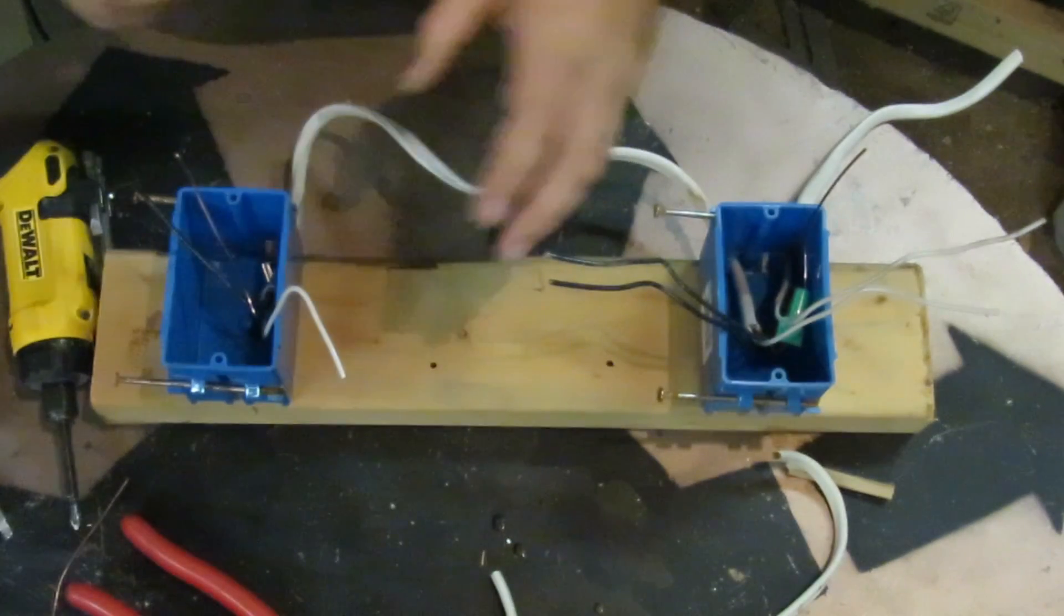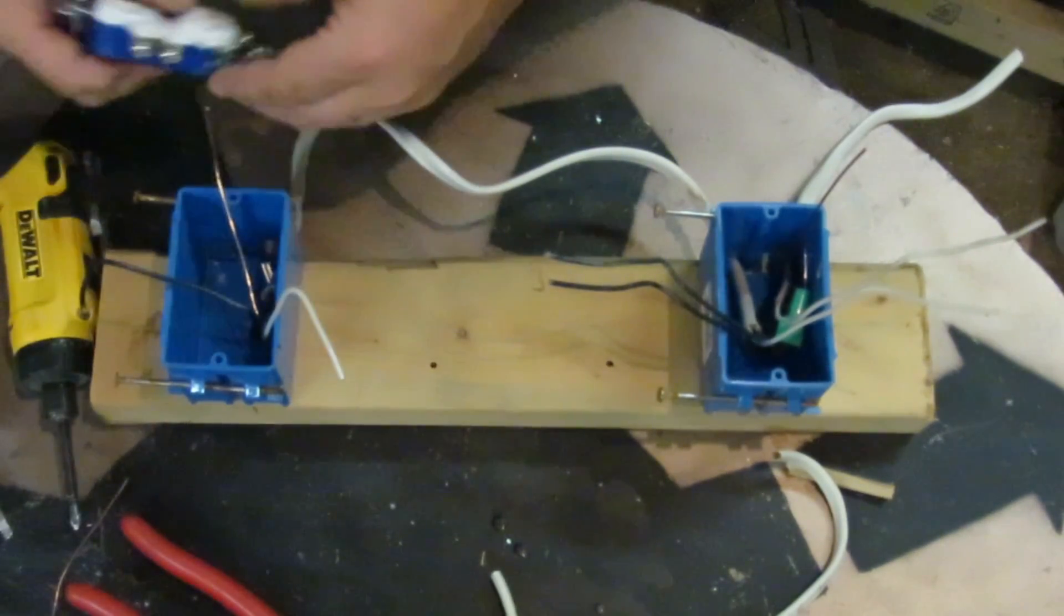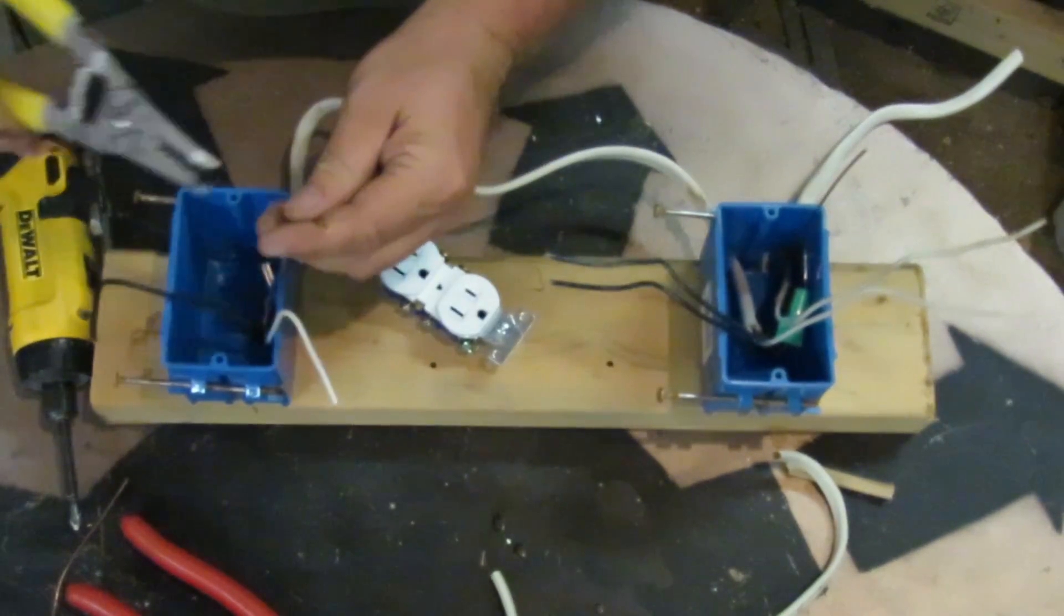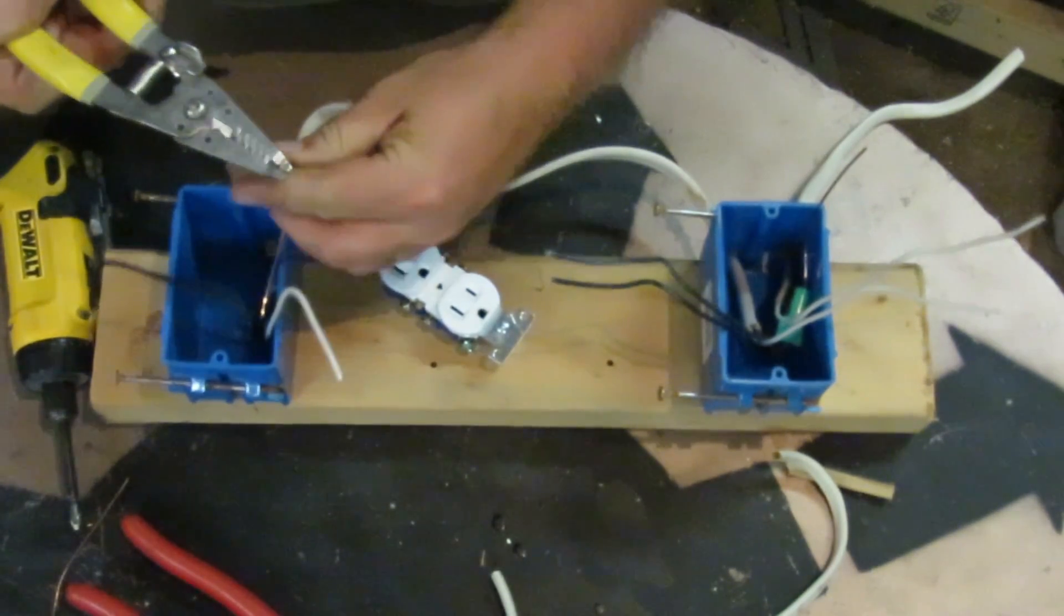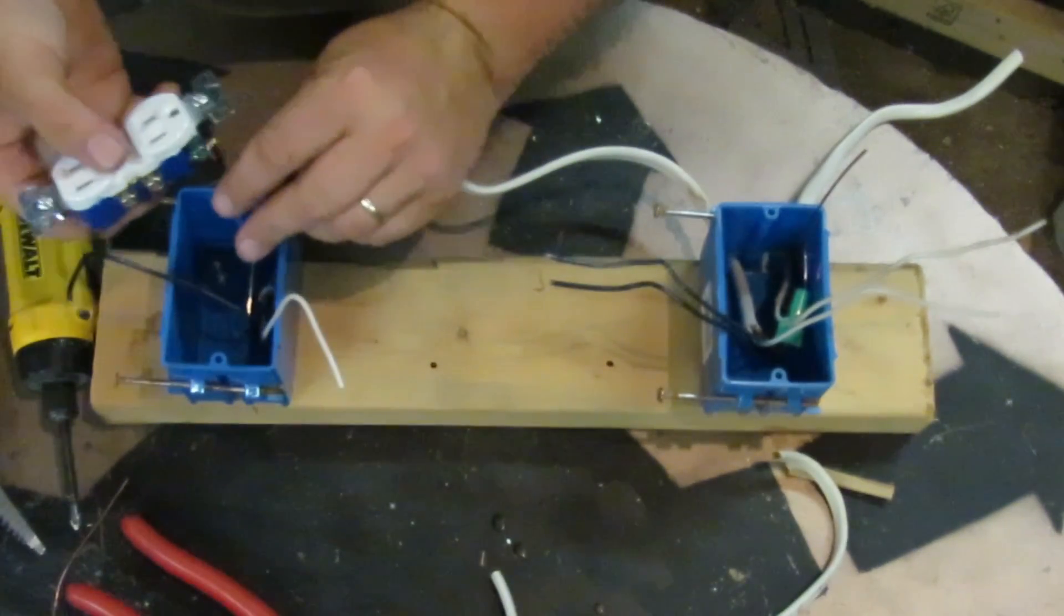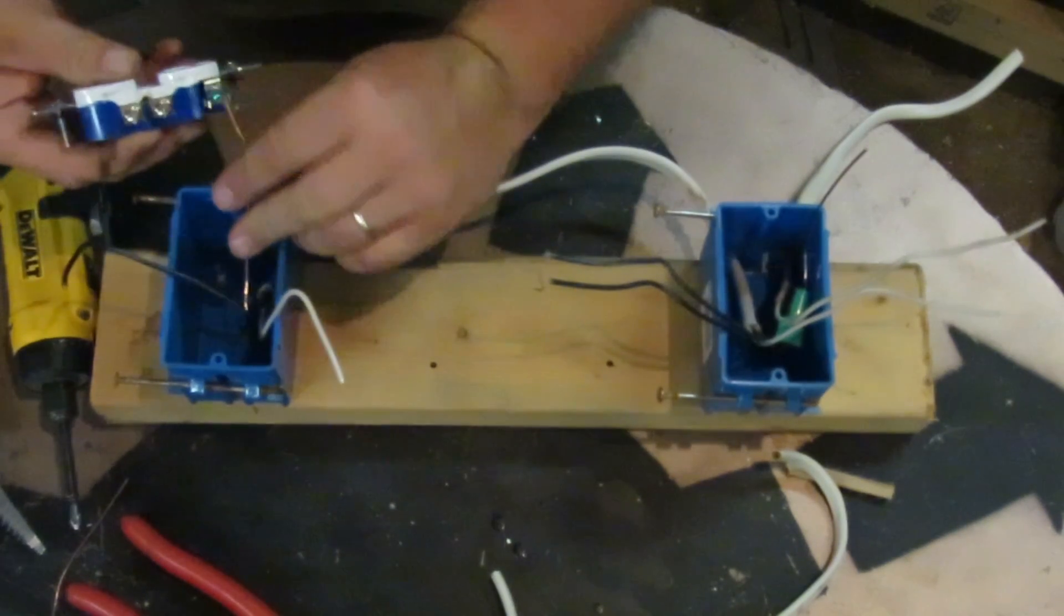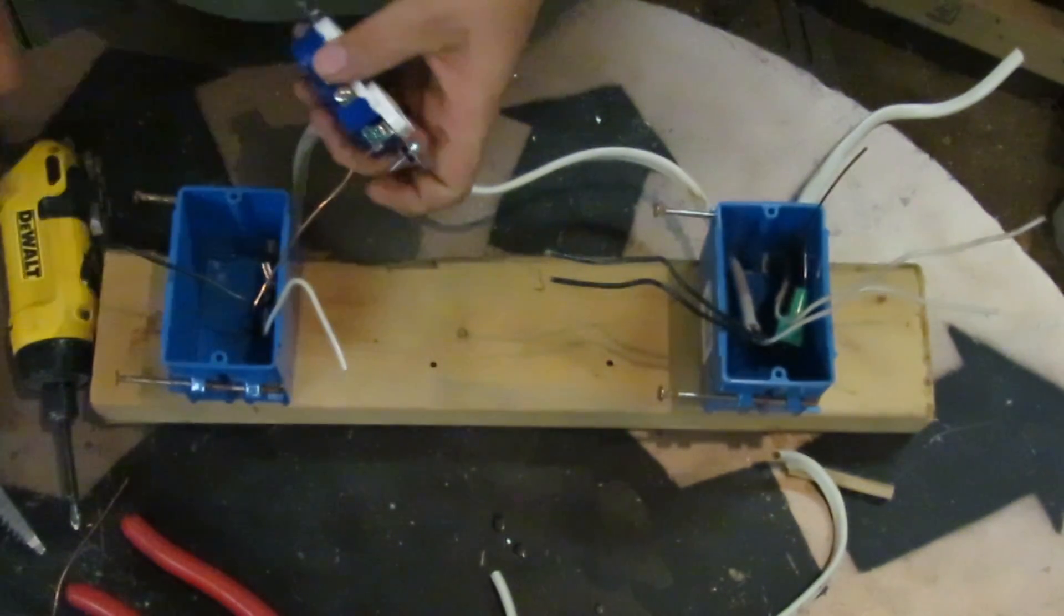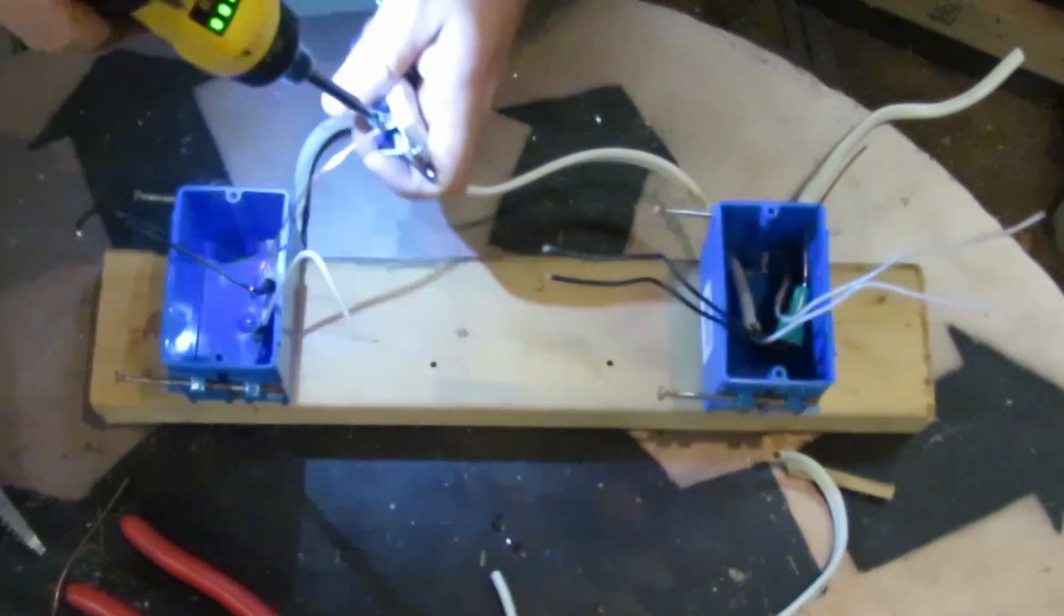So in order to hook up these receptacles, all you have to do is twist a little hook on the ground wire, hook it on the green screw, and then tighten it down.